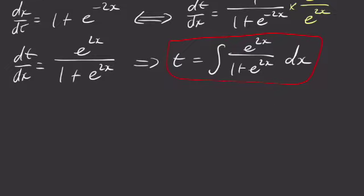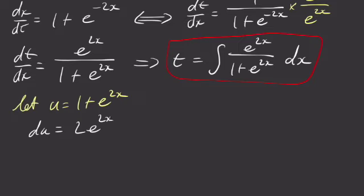So I'm going to let u equal 1 plus e to the 2x. And then I'm going to use the differential for this. I think it's a little bit nicer. So I get du is equal to 2e to the 2x dx.